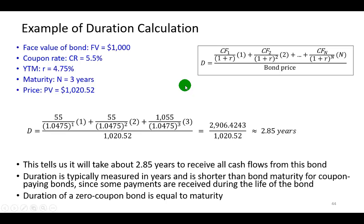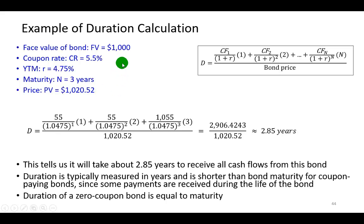As an example, say a bond has a face value of $1,000 with a coupon rate of 5.5%, and current market interest rates — the yield to maturity on the bond — is 4.75%. This bond has a maturity of 3 years. So if you plug and play, you're going to find that the present value of this bond is $1,020.52. We're assuming annual coupon payments. Armed with this information, we can utilize the Macaulay duration formula and solve for duration to give us 2.85 years, which tells us that it'll take about 2.85 years to receive all cash flows from this bond.